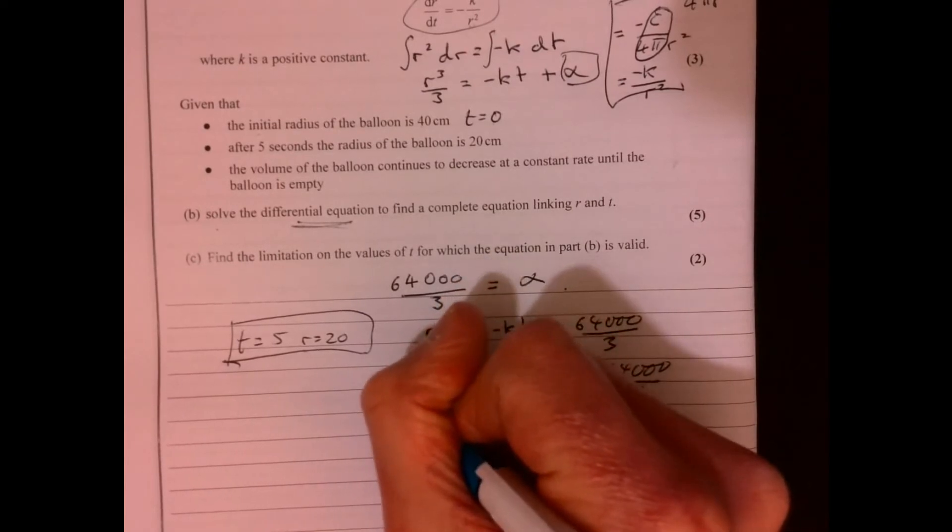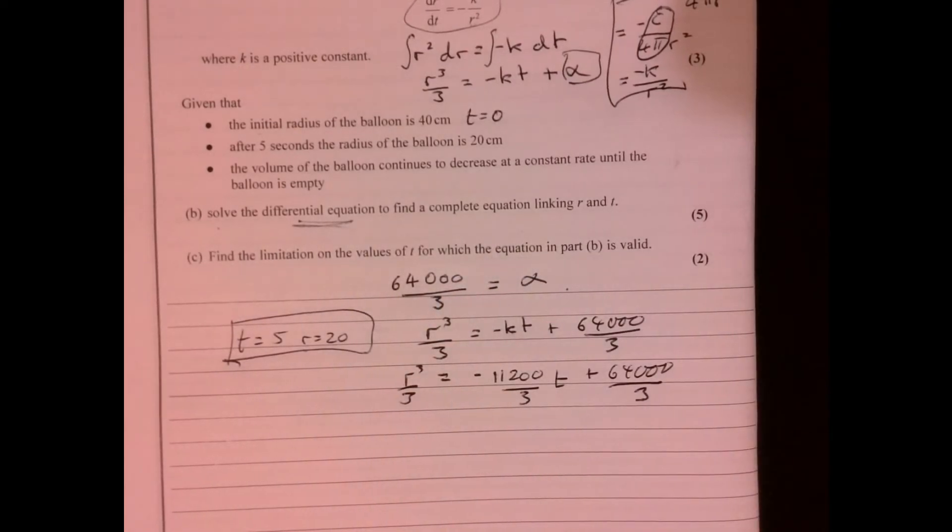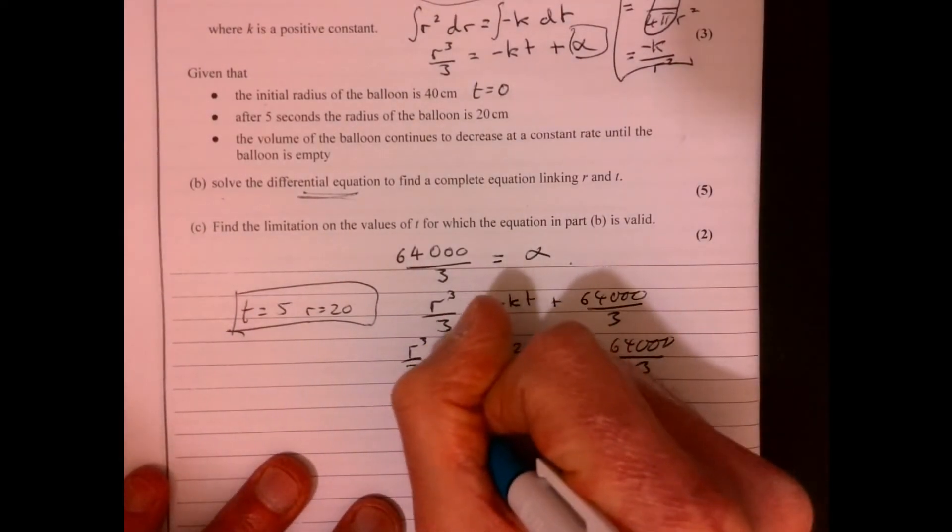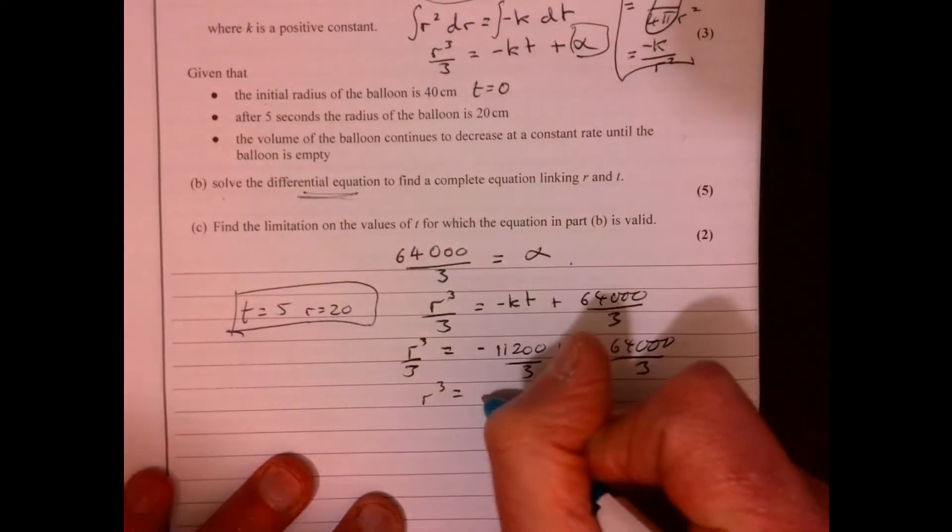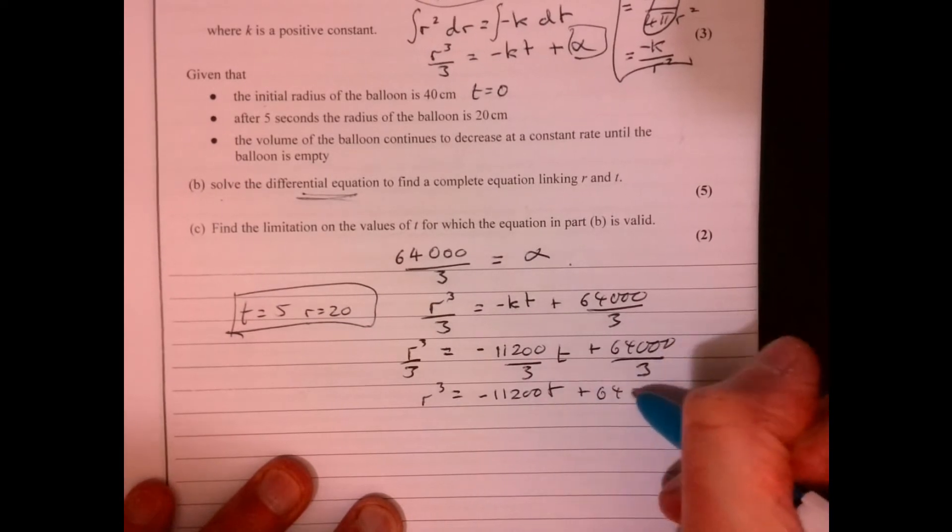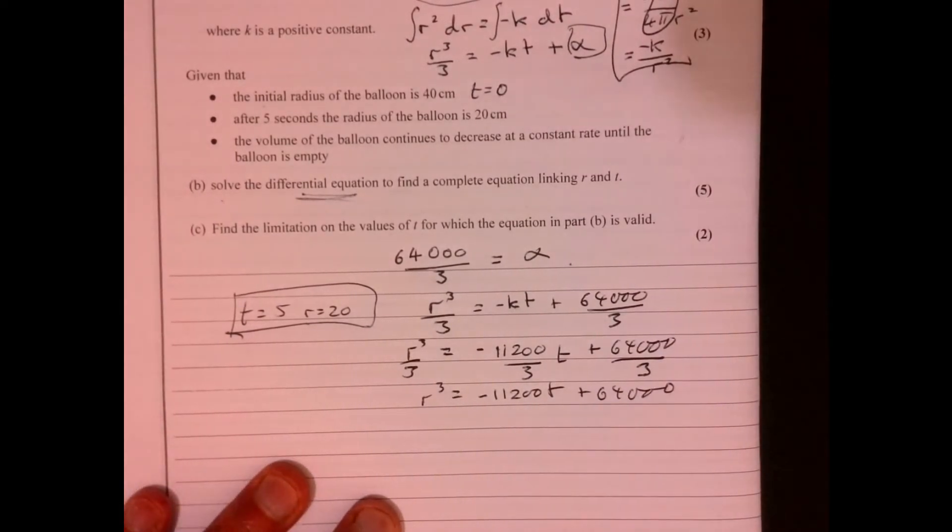And then r cubed over 3 is equal to this. Just multiply everything by 3. It's daft having those 3's there, isn't it? So if you multiply everything by 3, get r cubed equals minus 11,200 t plus 64,000.